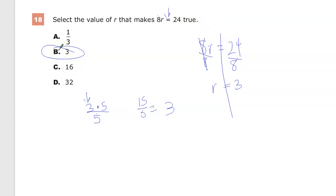So it's the only reasonable answer choice. So you don't need to go through all this. Really, you just need to know that 8r means 8 times r, and then you need to figure out what r could be to equal 24.